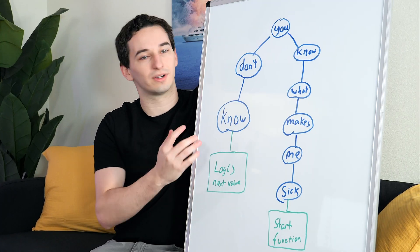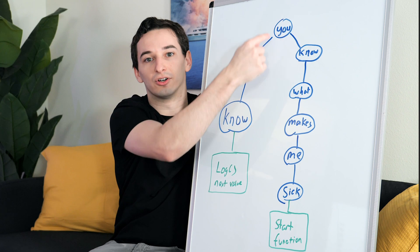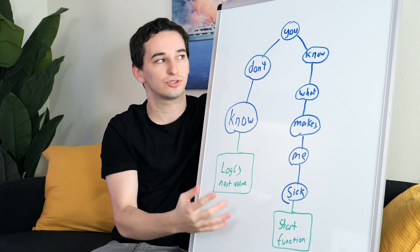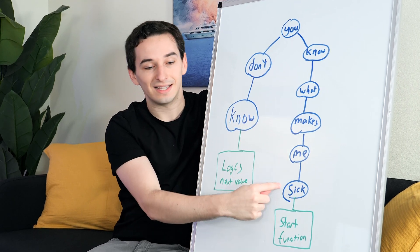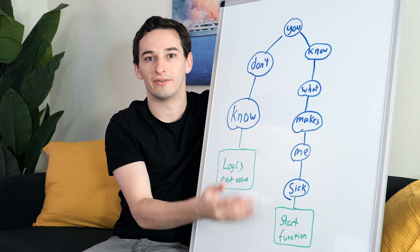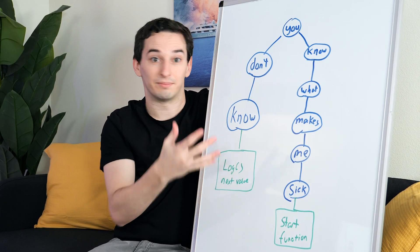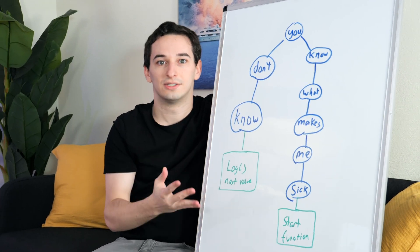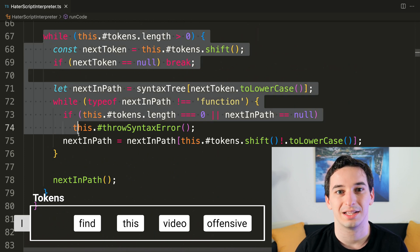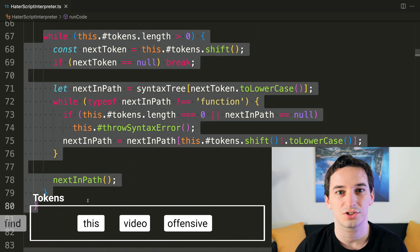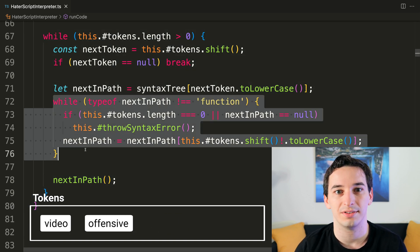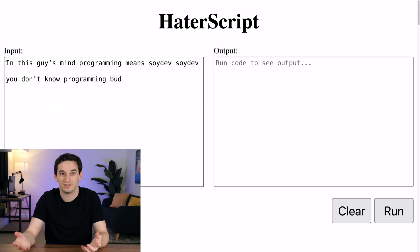Once we have tokens representing the code, we need to figure out what those tokens mean. I created a tree-like structure for this. For example, if it starts with the word 'you', that's the first token, and then we look at the next token and follow it down the tree. So 'you know what makes me sick' leads to the start of a function, and 'you don't know' leads to a log function — meaning we're logging something to the console. We loop through all tokens, go down that tree data structure (implemented using an object), and when we reach the leaf nodes, they're just functions we call. I also threw together a basic website where you can type in your code, click run, and it spits out the output.